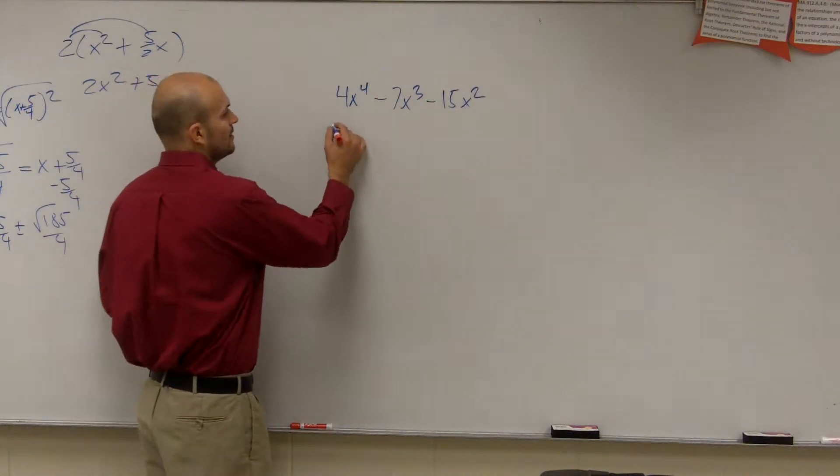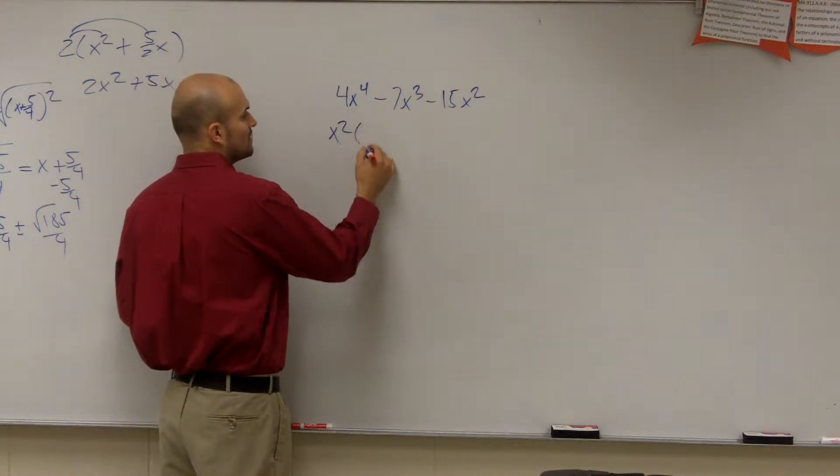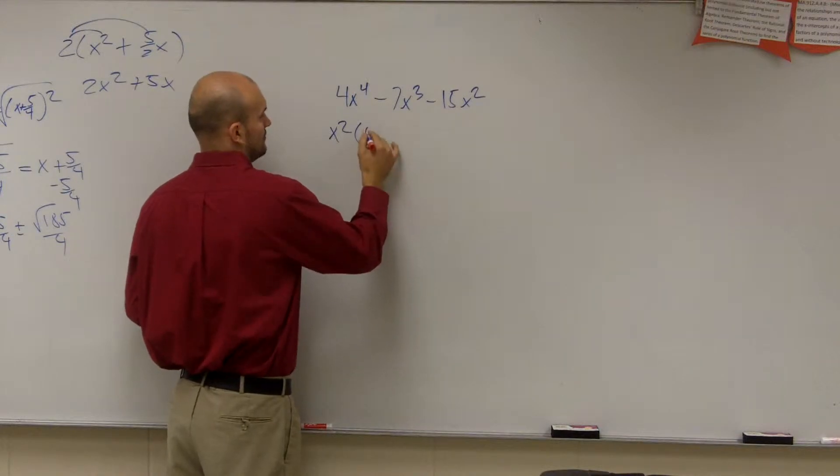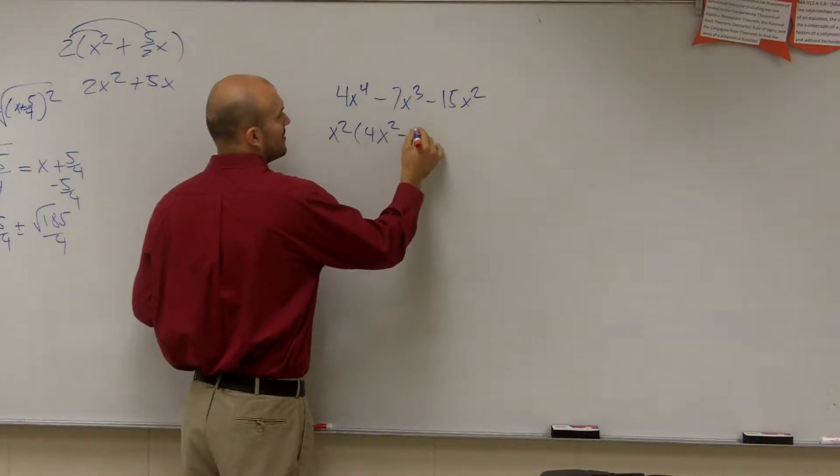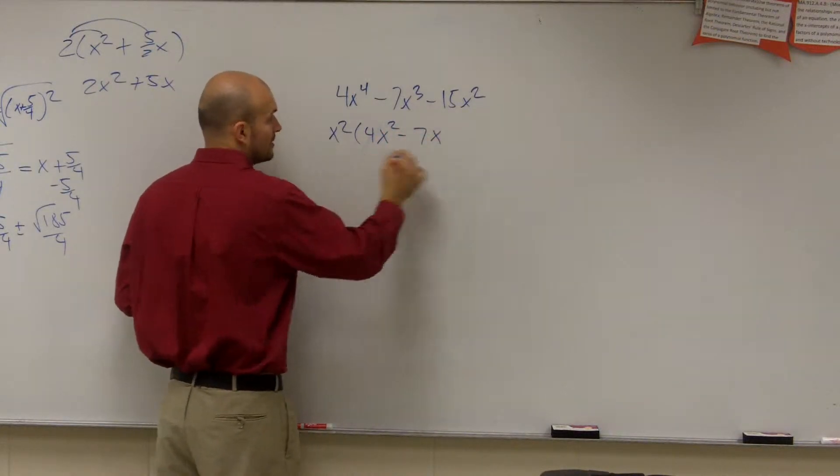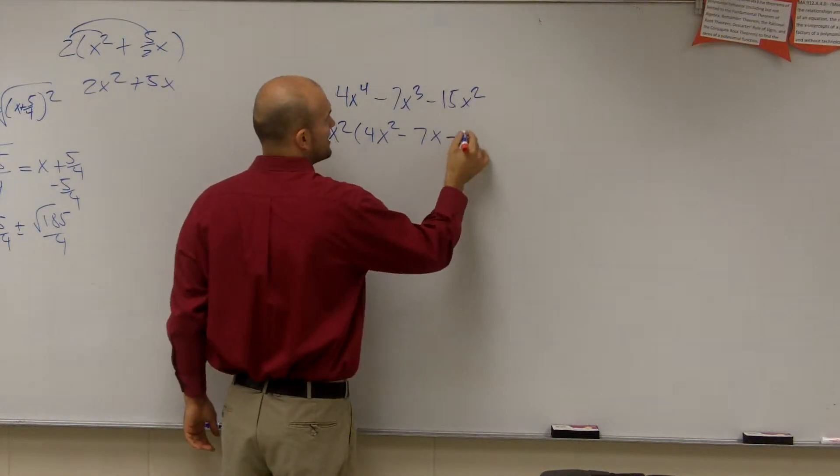but the variables do. We can factor out a common x squared. So if we factor out an x squared, I'm left with 4x squared minus 7x minus 15.